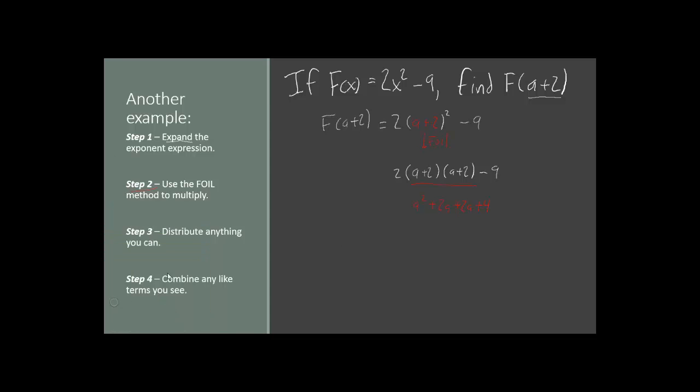Now we have to give that whole thing its own parentheses because we still have that 2 outside and it's going to be multiplied by everything in this parentheses. And then we have a minus 9 on the outside.